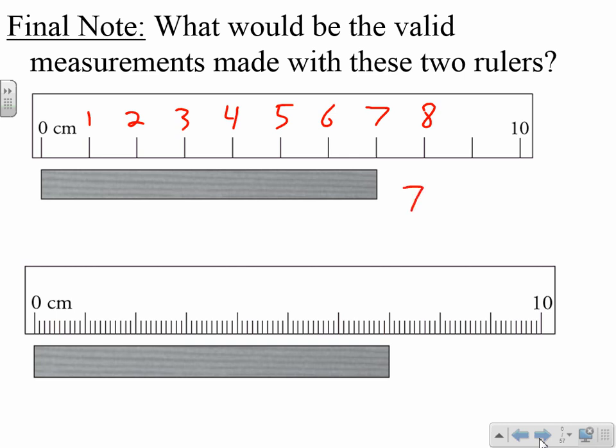Now, oftentimes students will say, well, it lands exactly on the seven. So the answer is seven. But remember, you have to have an estimated digit. You have to estimate into this area. And if it's exactly on the seven, then the estimated digit is a zero. So in this case, you have to have a zero. This is your estimated digit. And don't forget, the units have seven centimeters.